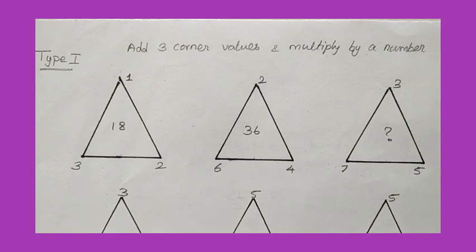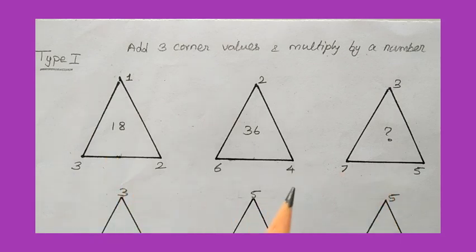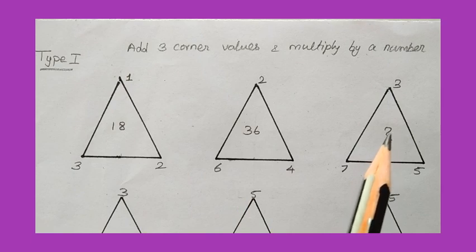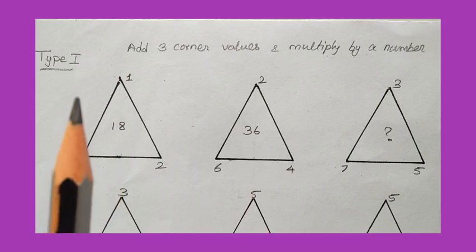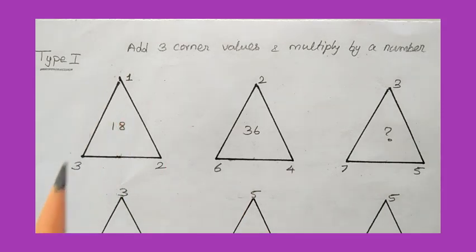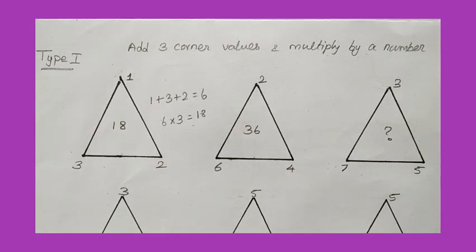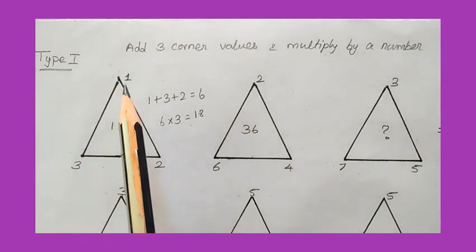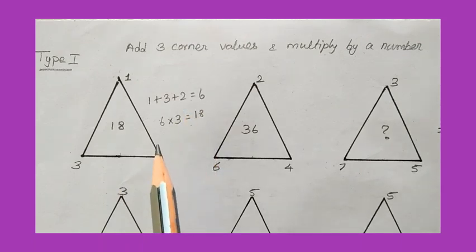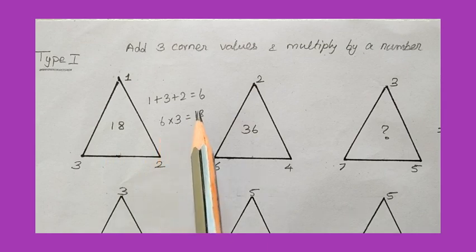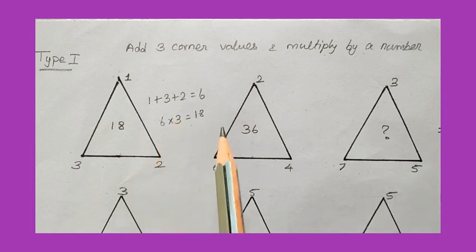Now we see the Type 1 problem. The corner values of three triangles are given and we need to find the third triangle's middle value. First we compare the triangles — we try adding the three corner values. Adding 1 plus 3 plus 2 gives 6. Comparing 6 with the inside value 18, if we multiply 6 by 3 we get 18. I'll try this logic for the second triangle.